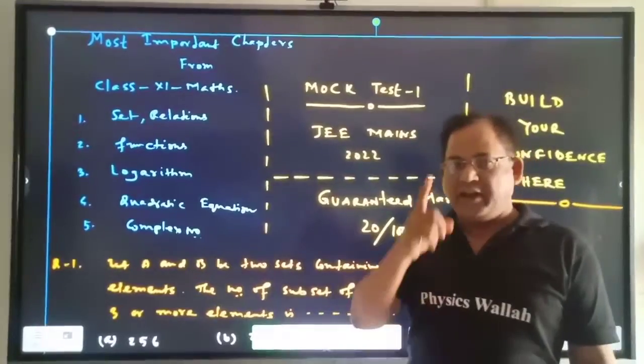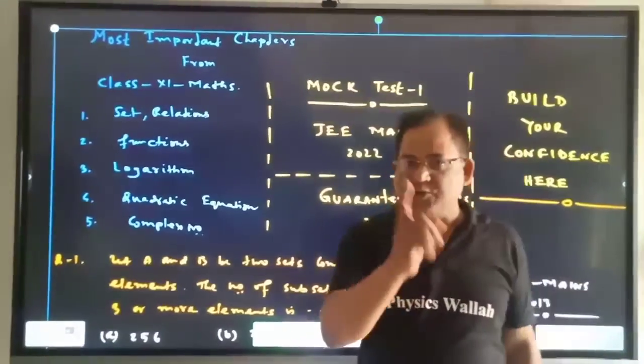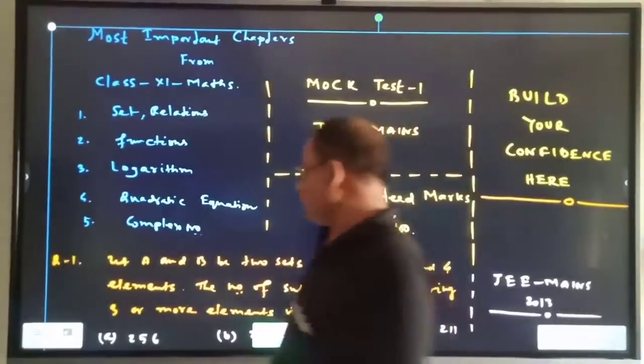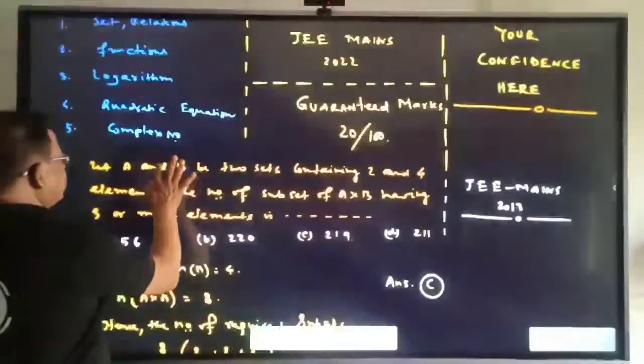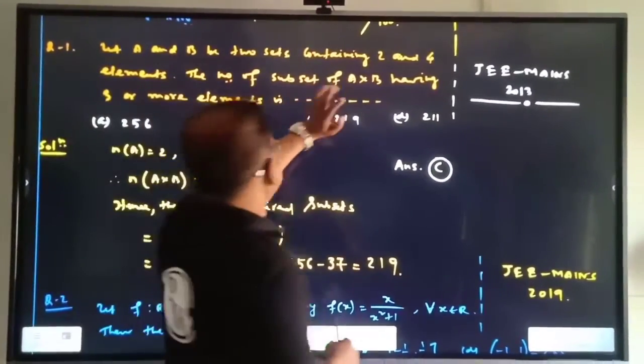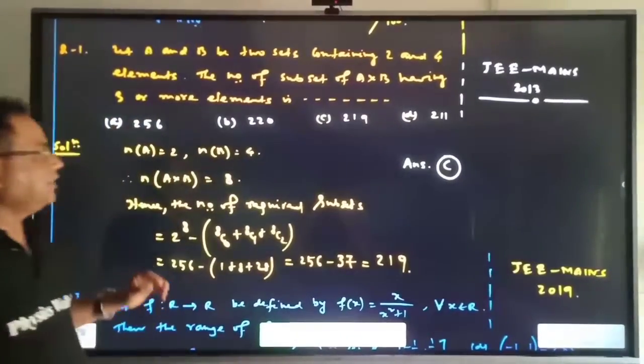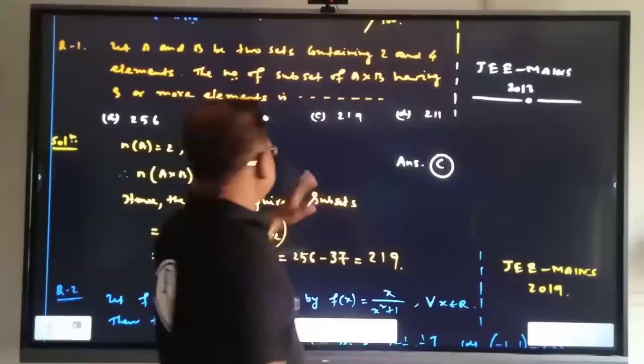If you want to get very good marks, 120 plus marks, you have to practice these guaranteed questions. Today's first question: Let A and B be two sets containing 2 and 4 elements. The number of subsets of A union B having 3 or more elements is to be found from JEE Mains 2013.